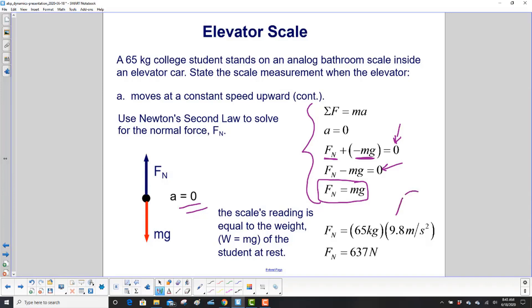We then substitute in our variables here, the numbers. 65 kg for the mass. Gravitational acceleration, 9.8 meters per second squared. And we get 637 newtons. In this case, the scale reads the same as the weight of the student at rest. So if the student was in the bathroom on the bathroom scale standing on it, it would show 637 newtons.